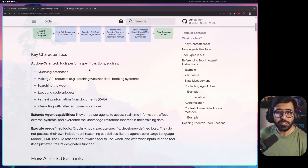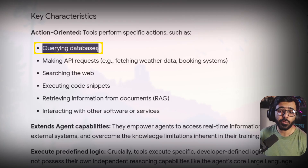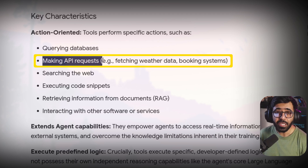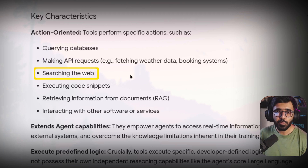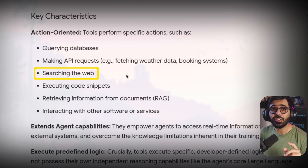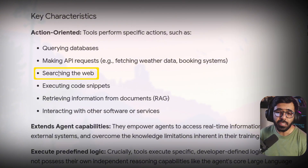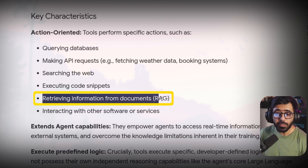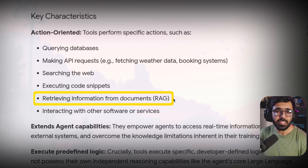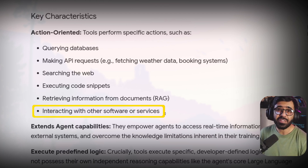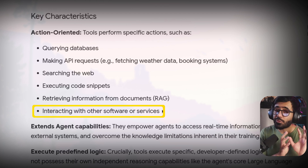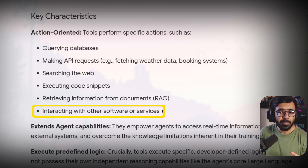You can use these tools for various use cases — for example querying databases, making API requests, or searching the web. As you saw in the previous video where we built a marketing campaign agent, it used the search tool built into the agent development kit. You could also use it for retrieval augmented generation (RAG), and we are going to have a video on that in this series. Finally, it can also interact with other software tools, save things to the file system — essentially anything a Python function allows you to do.